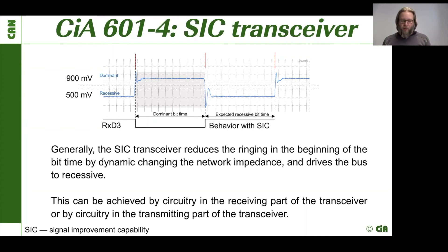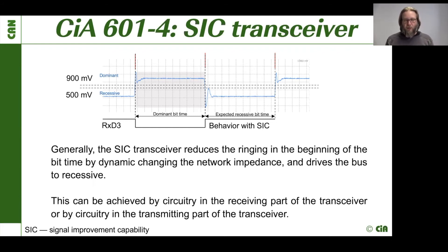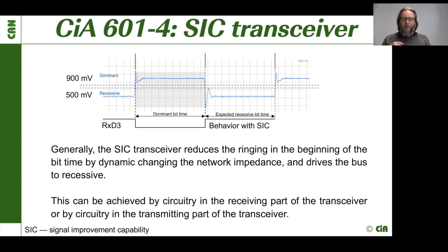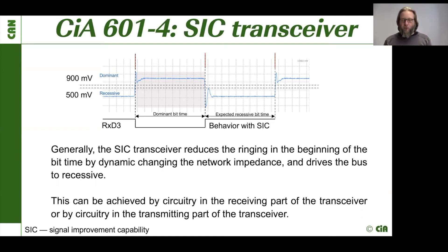The SIC highly improves our network reliability and even helps in the robustness of the network. First tests also with the circuitry used in CAN-XL environments have shown that the SIC transceiver even has a huge improvement in classical CAN-based networks, because it helps on our standard problems which we have in the field — which is, for example, someone didn't have the termination switched on. Even in those kinds of networks, it really helps and improves our network quality and robustness of CAN.